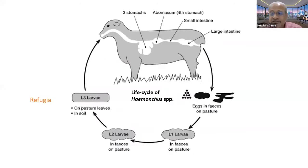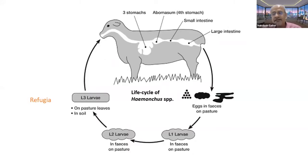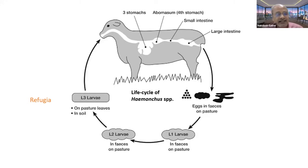Haemonchus is present in the abomasum, where it produces large numbers of eggs voided in feces. Under suitable climatic conditions — temperature around 25 to 30 degrees and relative humidity more than 70 percent — eggs hatch within 24 to 48 hours and larvae develop from L1 to L2 to infective L3 stages. When L3 stages are swallowed by the animal, it becomes infected. These L3 stages also migrate on grass blades early morning and late evening so they are available for sheep and goats to pick up.